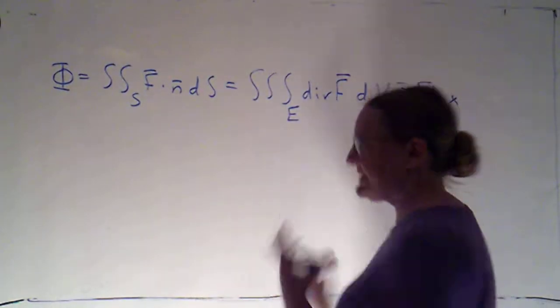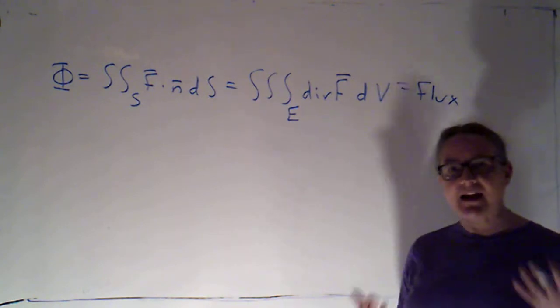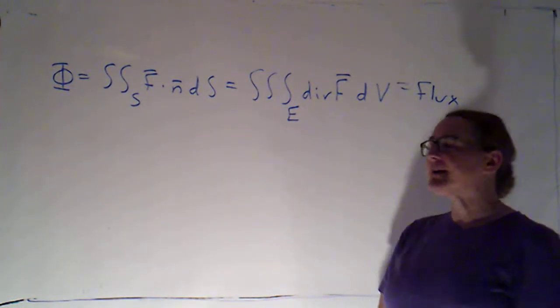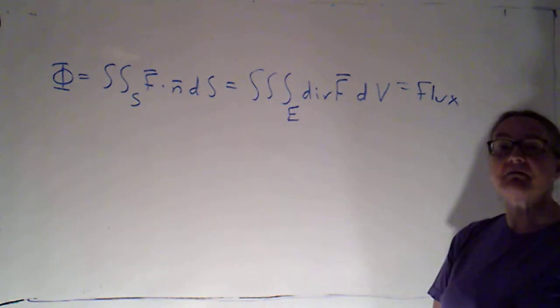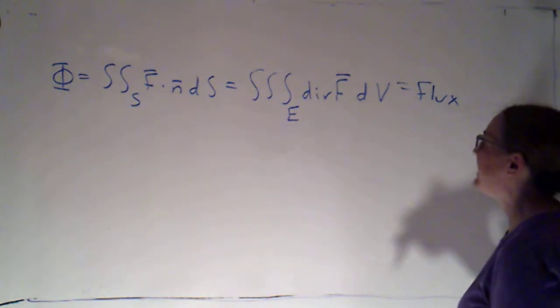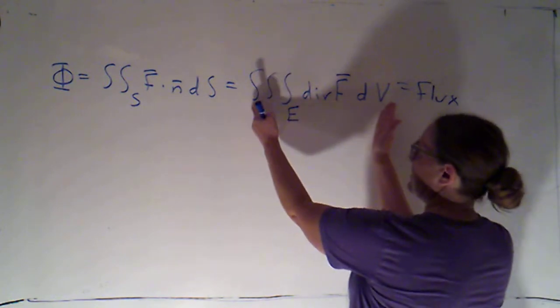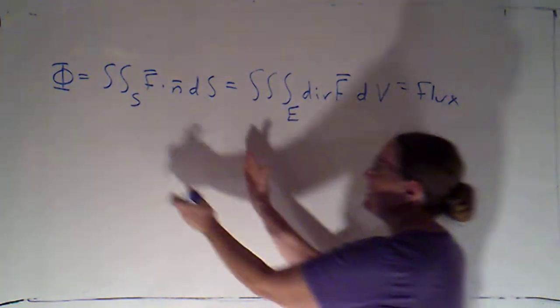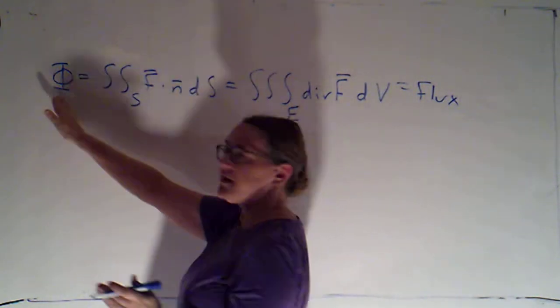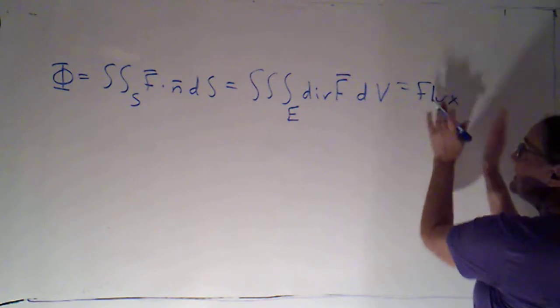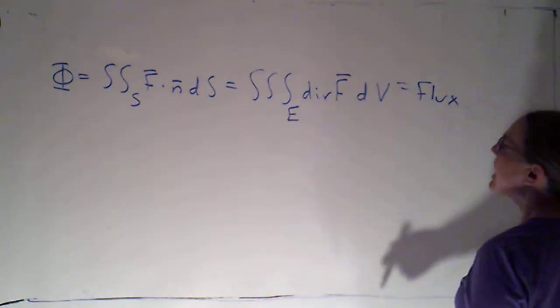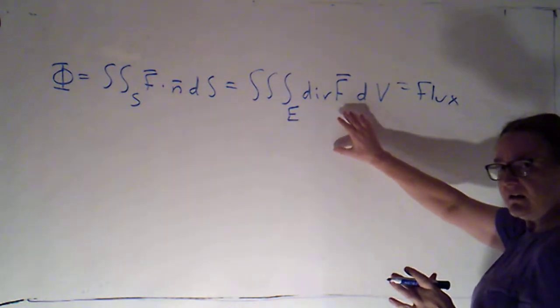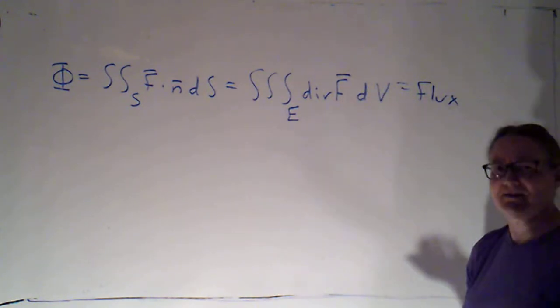Okay, now that we've had a chance to state the divergence theorem and practice using it a little bit, I want to use it to see if we can understand what it tells us about what divergence means. Because the divergence theorem tells me that this triple integral of the divergence of a vector field F is equal to this double integral, which I know is equal to the flux. So if I know what I get when I integrate it, that should help me to figure out what does it mean?